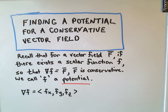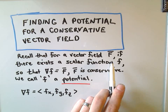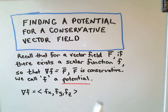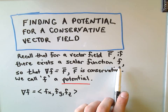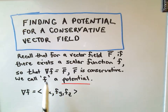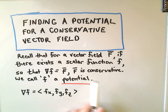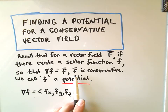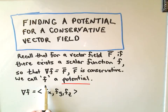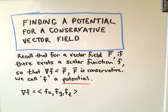In this video, I want to talk about finding a potential for a conservative vector field. Recall a vector field capital F — we say that it is a conservative vector field if there exists a scalar function little f, so that when we take the gradient of little f, we get capital F back. The scalar function little f is what's known as a potential, and that's what we're going to find in this video.